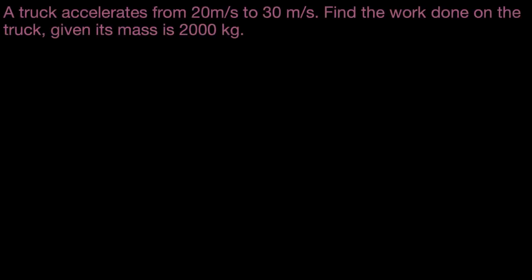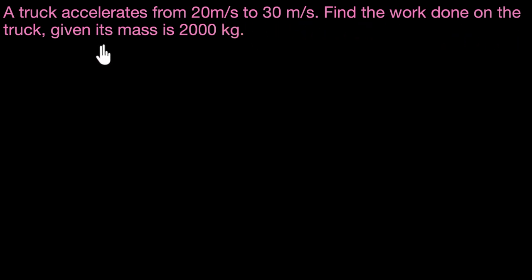Let's solve a couple of problems on calculating work when velocities are given to us. Here's the first example: a truck accelerates from 20 meters per second to 30 meters per second. Find the work done on the truck, given its mass is 2000 kilograms.